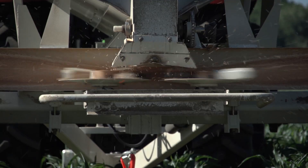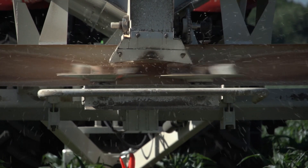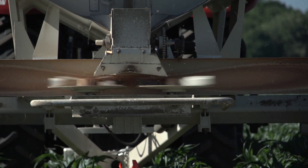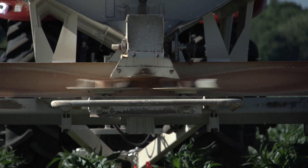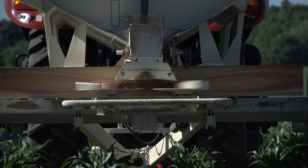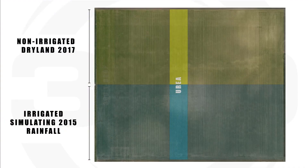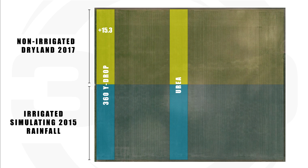Where we had the urea strip side by side with Y-Drop at V15 — we put the urea on at about V6/V7, then came back at a later date with exactly 100 units the same amount — we showed over a 15-bushel response, a 15.3-bushel response.